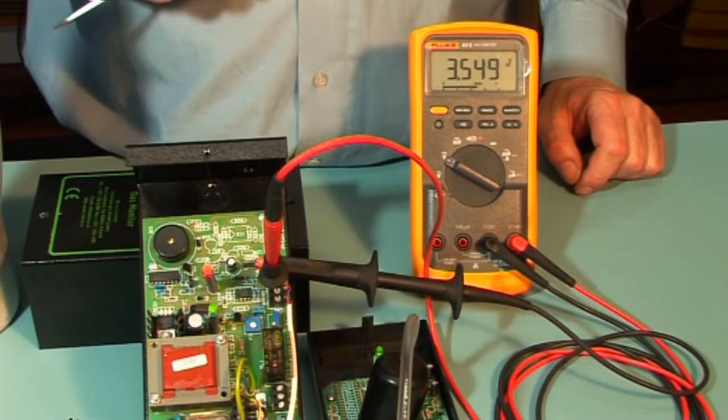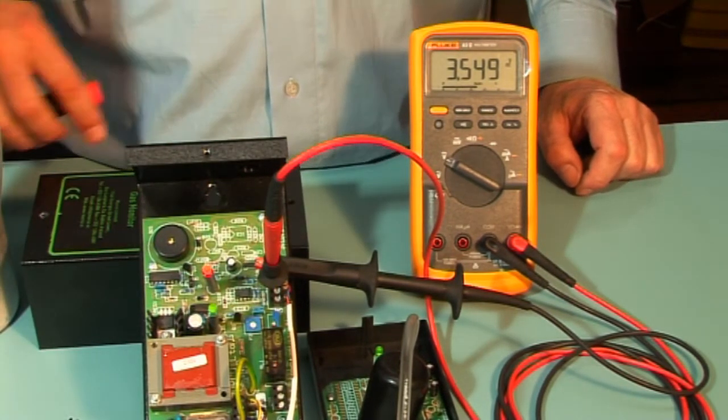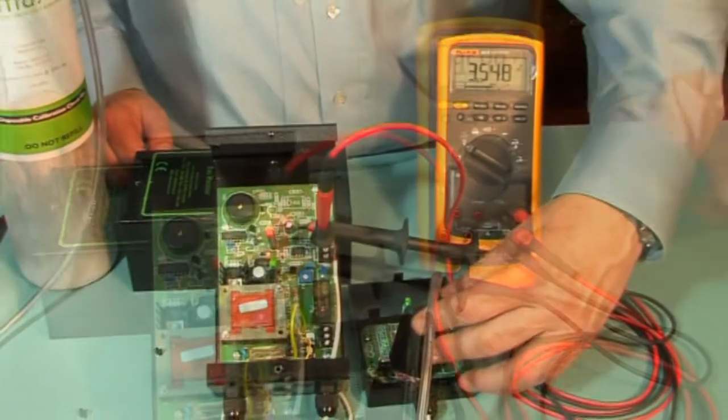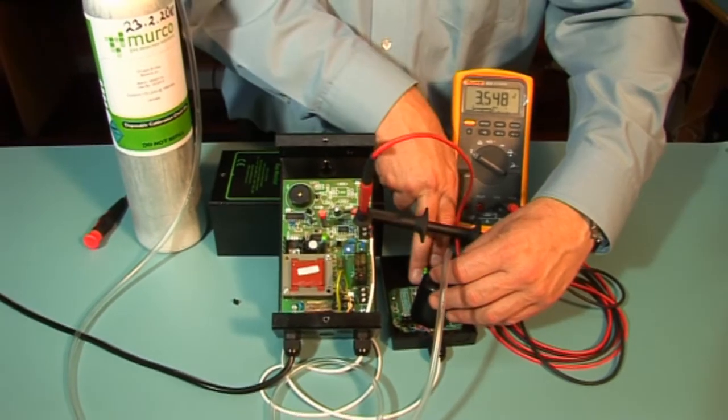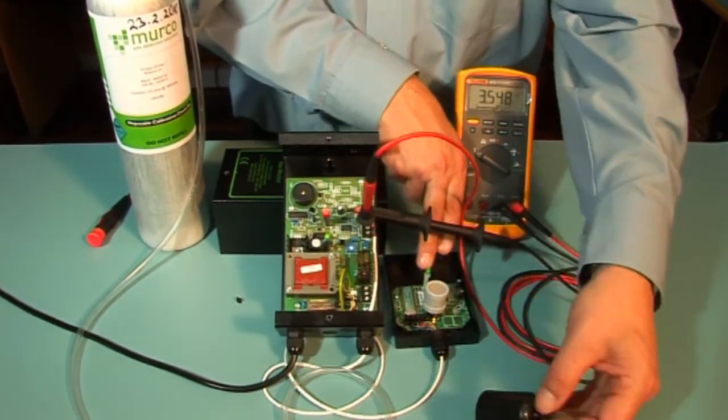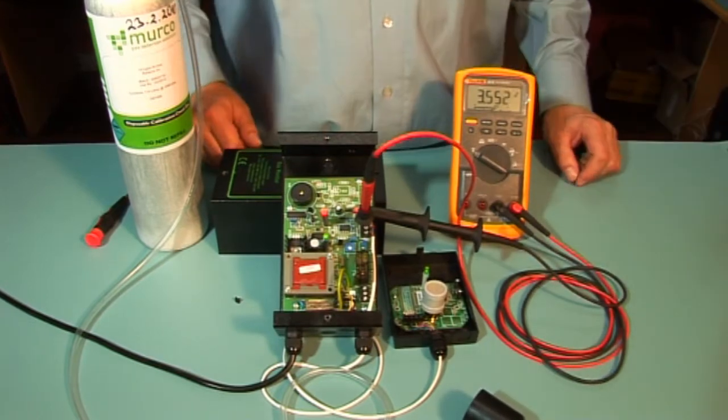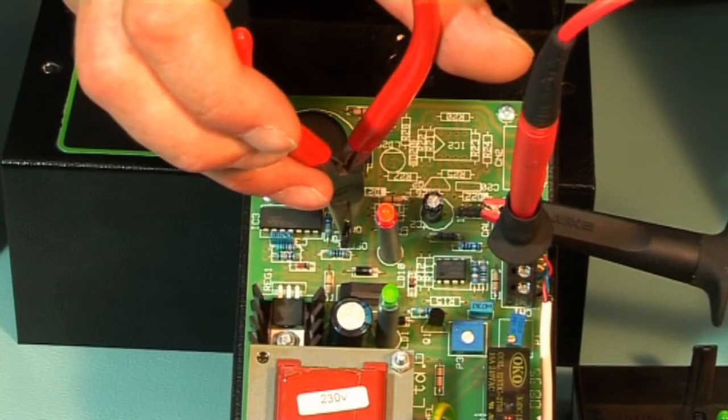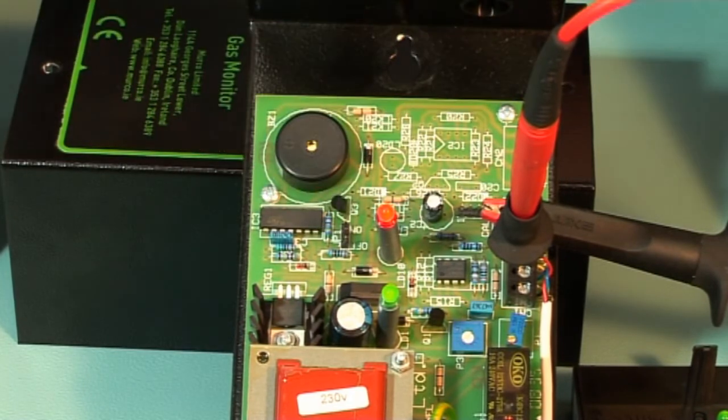Remove the gas and allow the sensor to fully recover and record this new standby voltage for future calibration reference in the system log and on the rating label. The sounder can be silenced by removing jumper JP1.